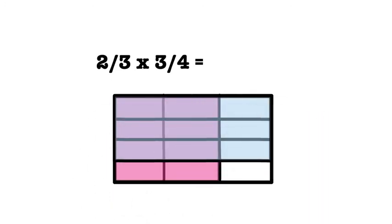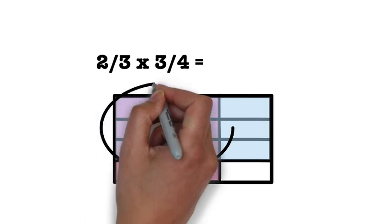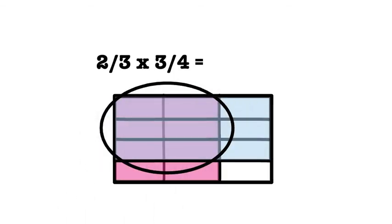To determine our answer, let's look at the total number of pieces we have created when dividing our rectangle. If you count up all of the pieces, you should see that we have twelve total pieces and six of them are double-shaded or have overlapping shading. Remember that the double-shaded area represents the answer. Since six of the twelve are double-shaded, our answer is six-twelfths or one-half if we simplify our answer.